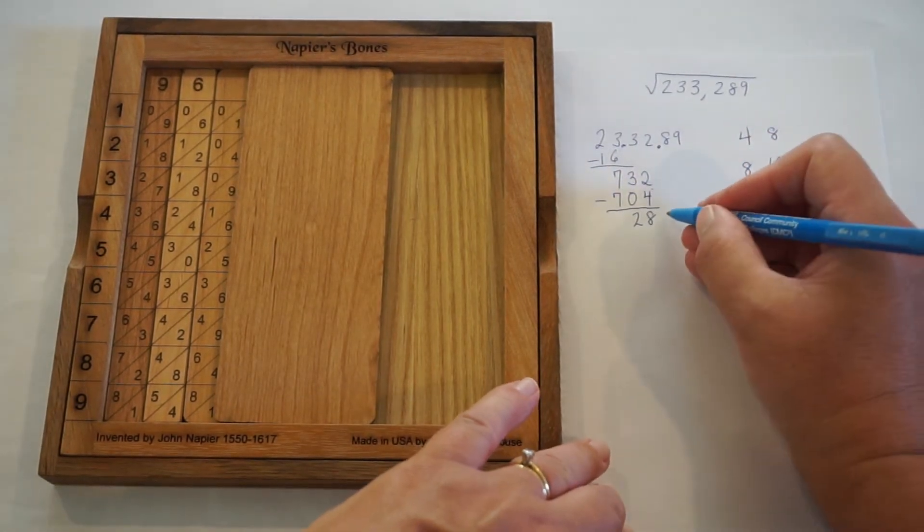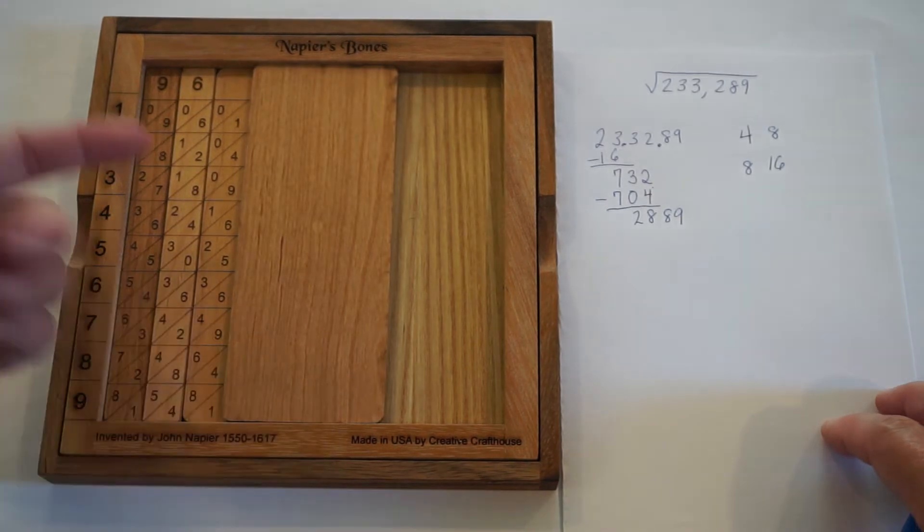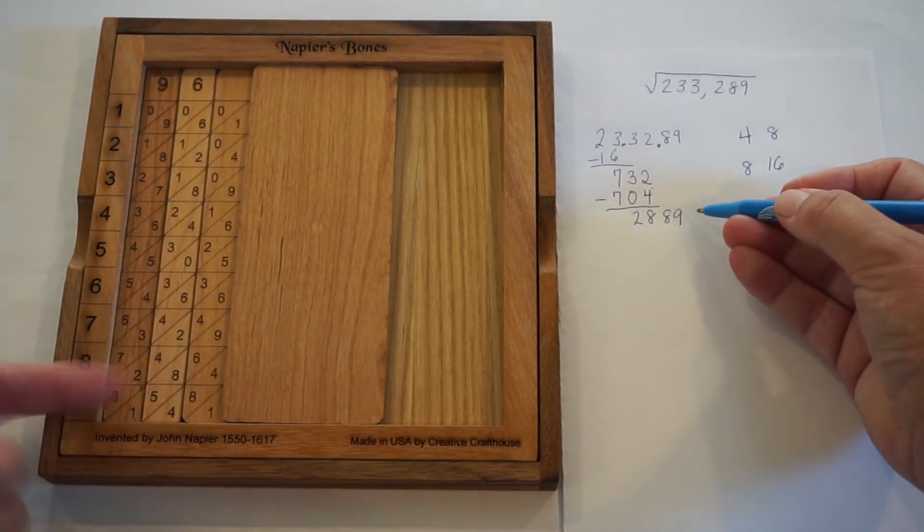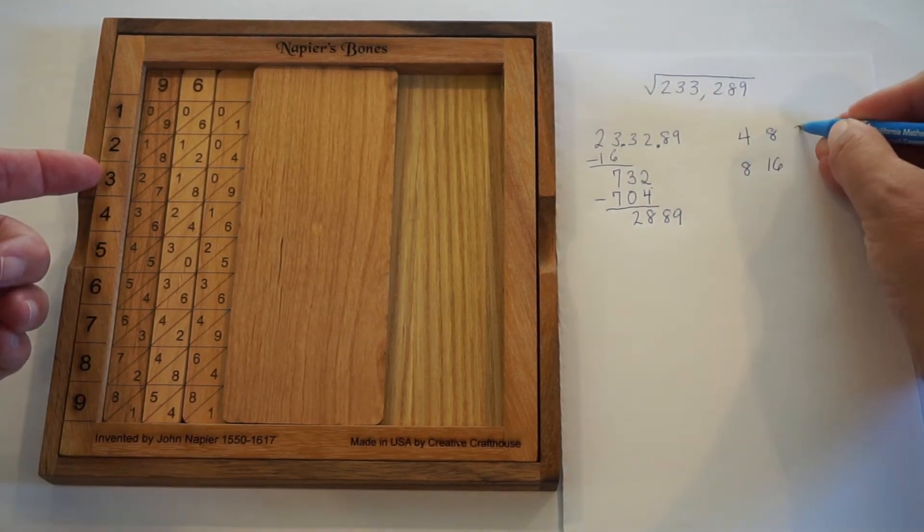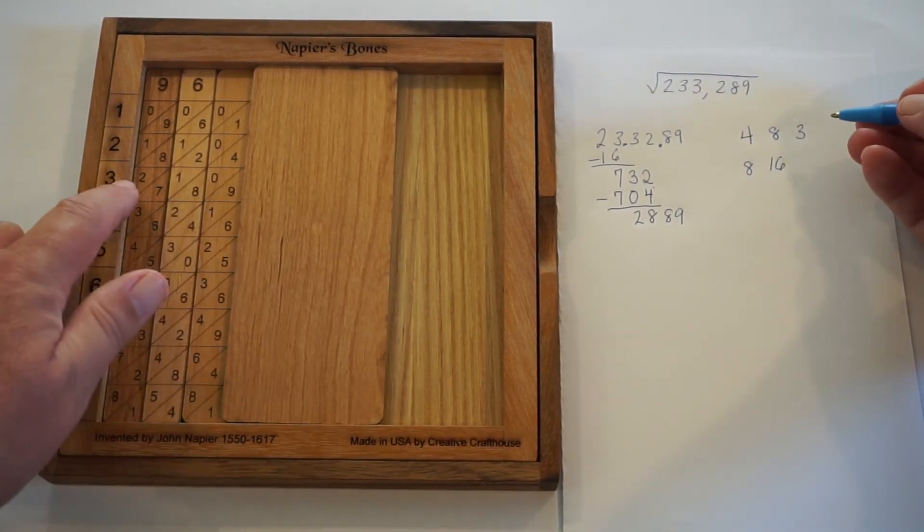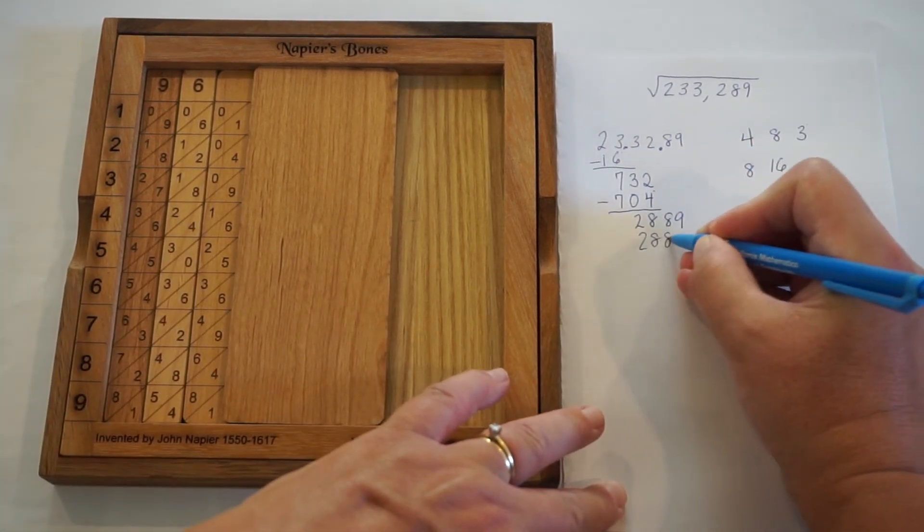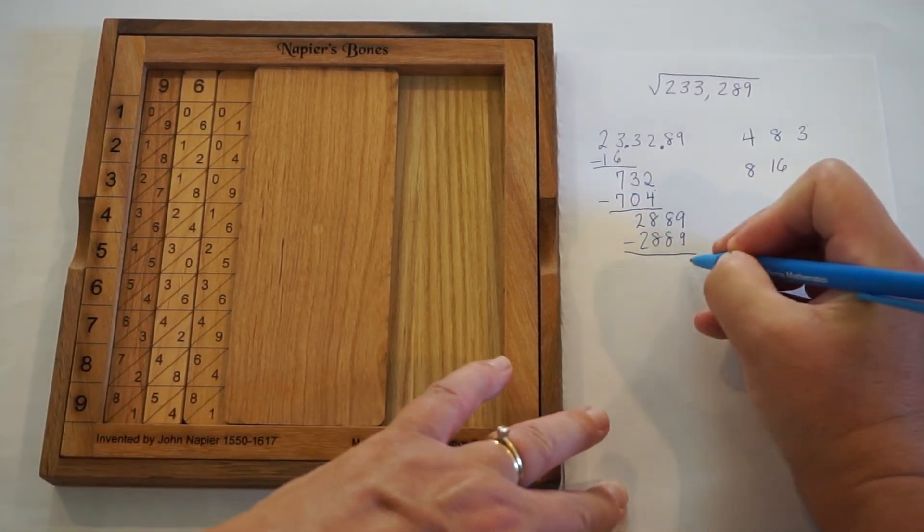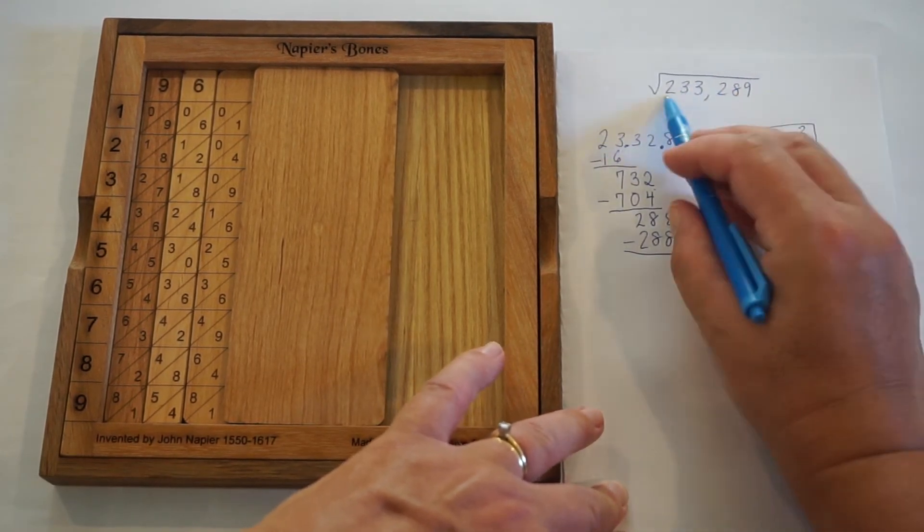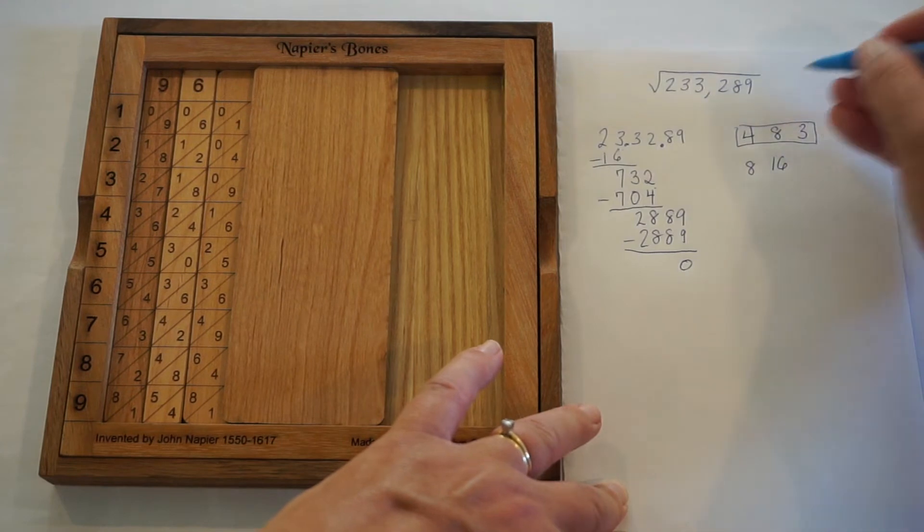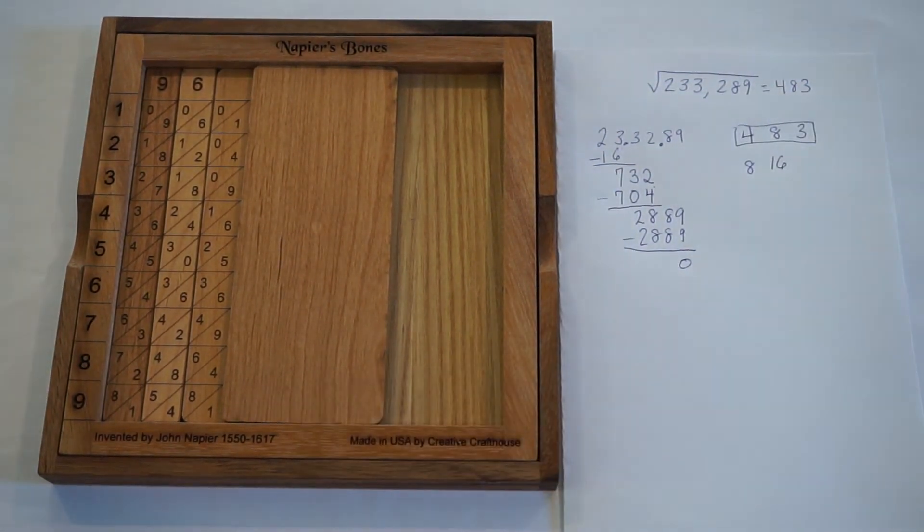So I subtracted, I'm going to bring down. And again, I'm looking for the number in here closest to this one without going over. And I see that right here next to the number 3. That actually is 2,889. It goes in evenly because this number was a perfect square. And so the square root of 233,289 is 483.